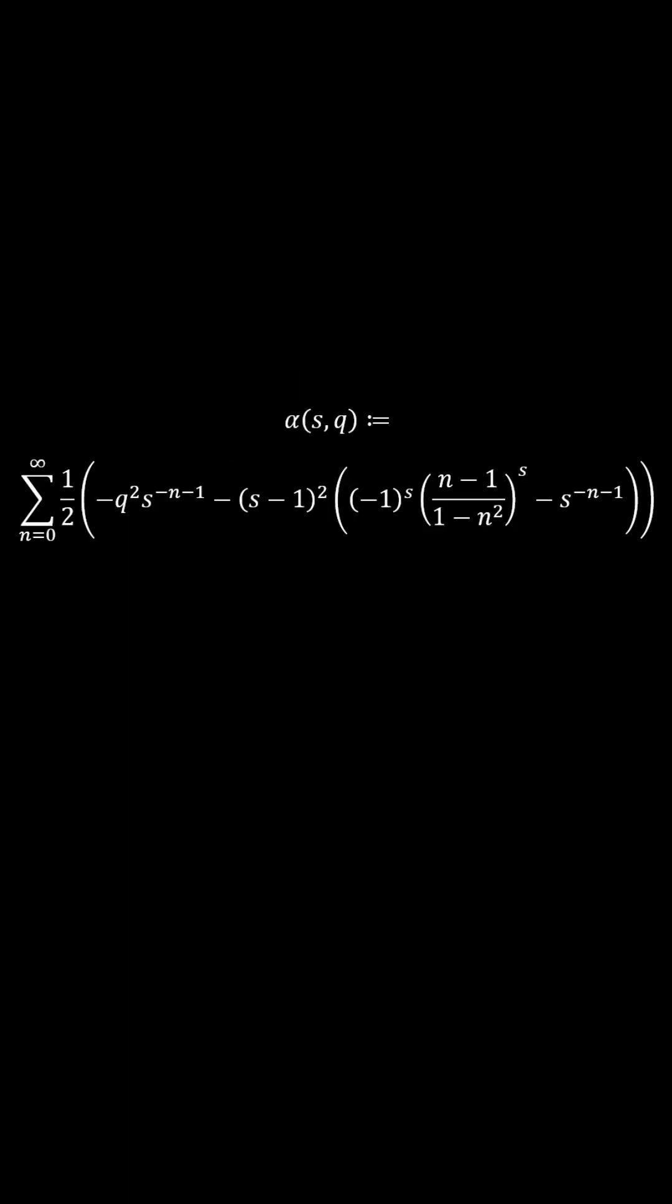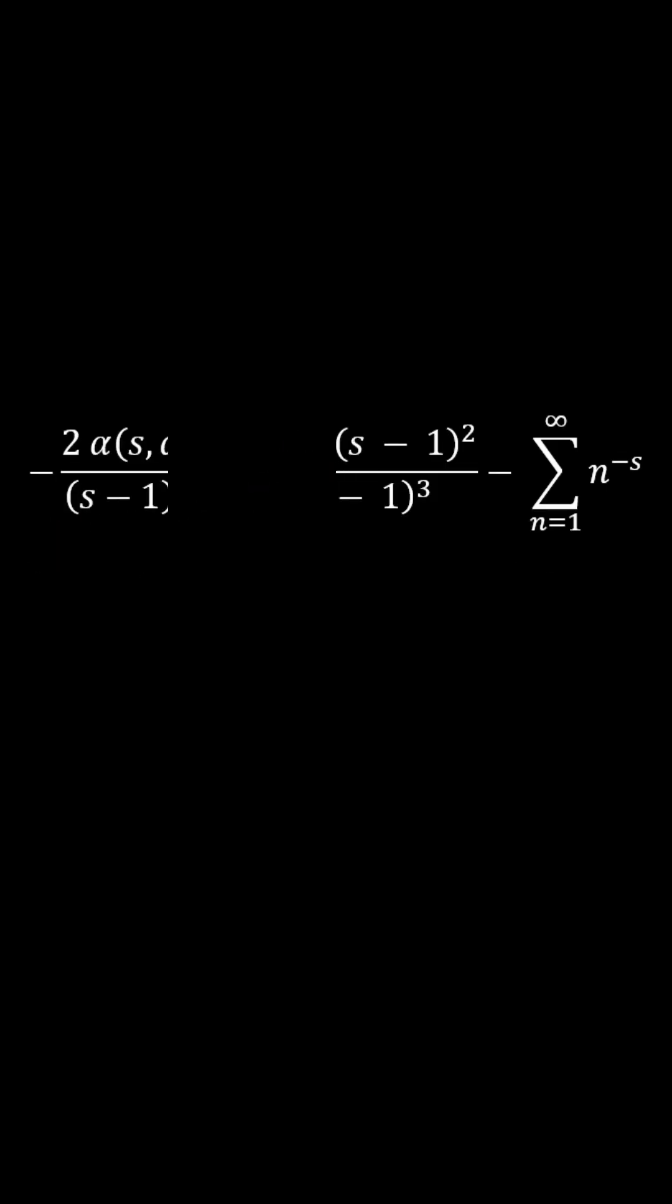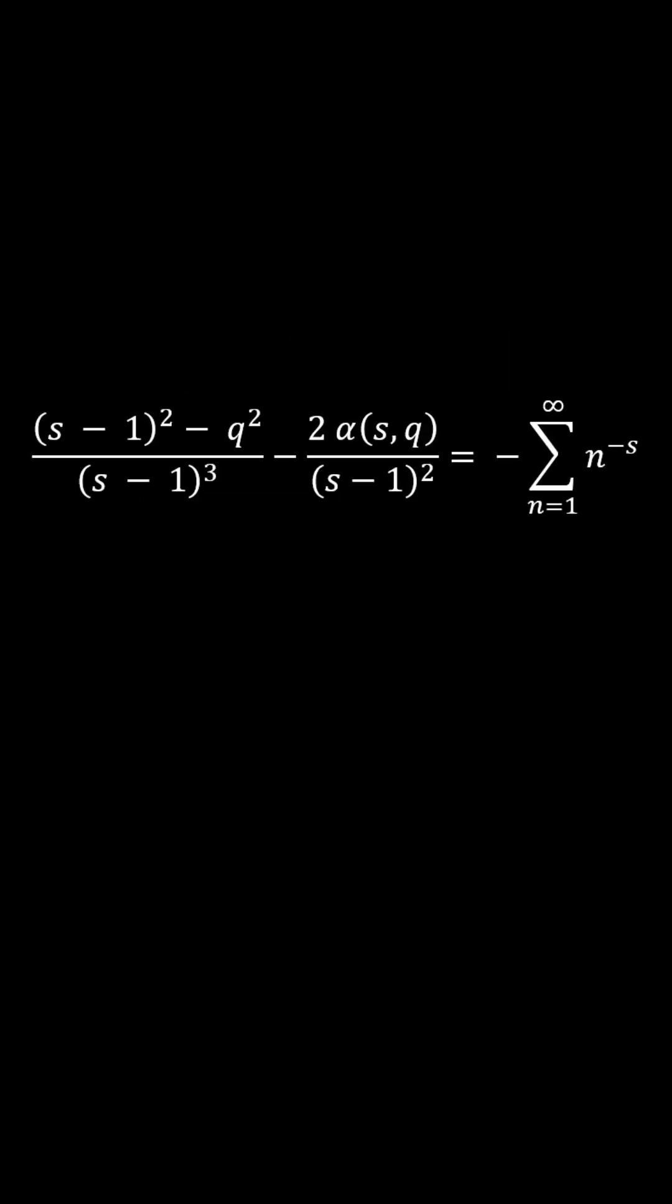Define this Dirichlet series as alpha. Multiply it by all this, and subtract it from all this, so that everything cancels to the zeta function.